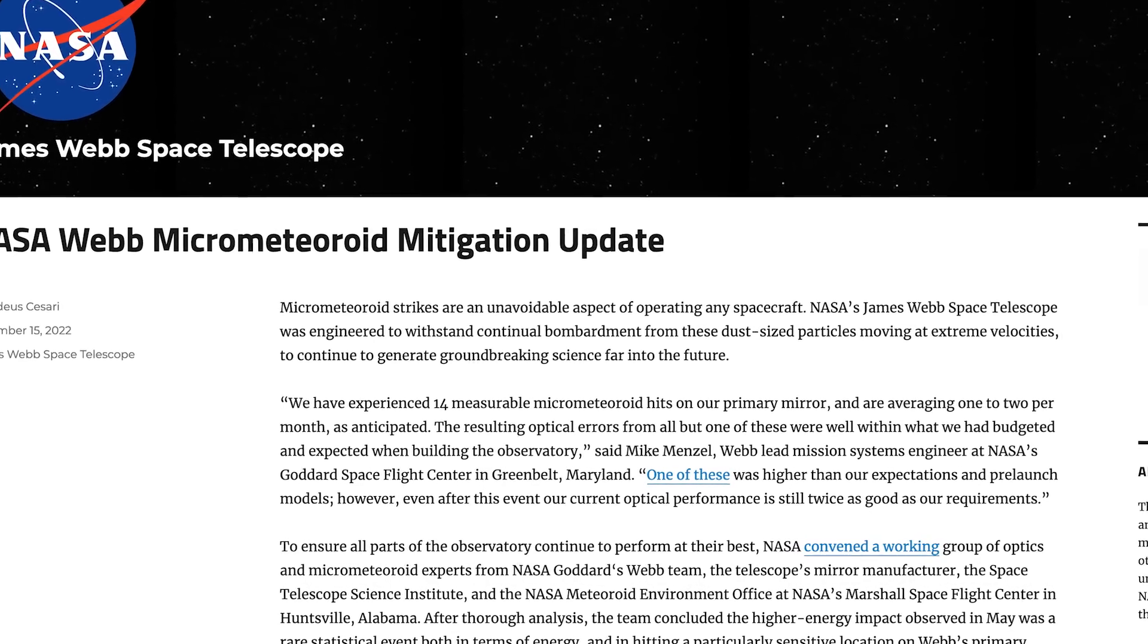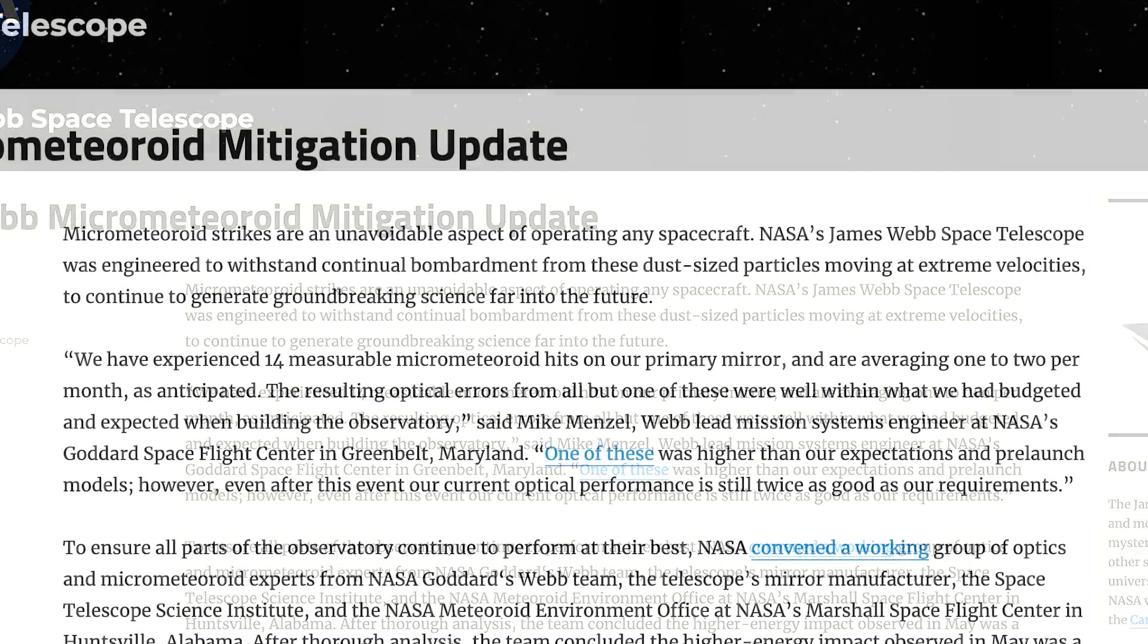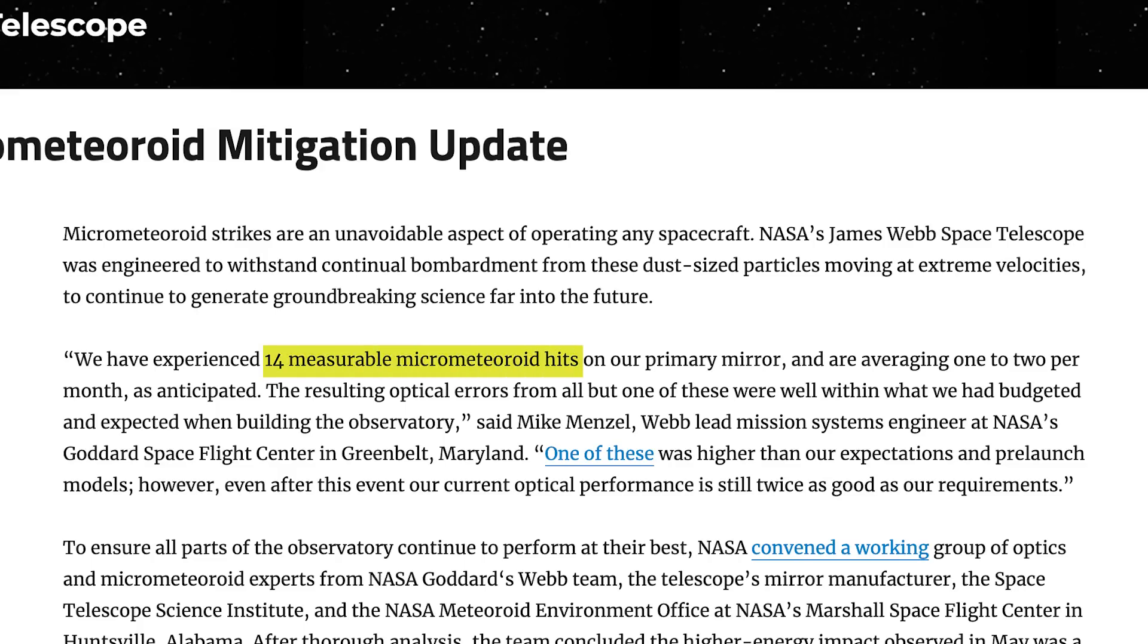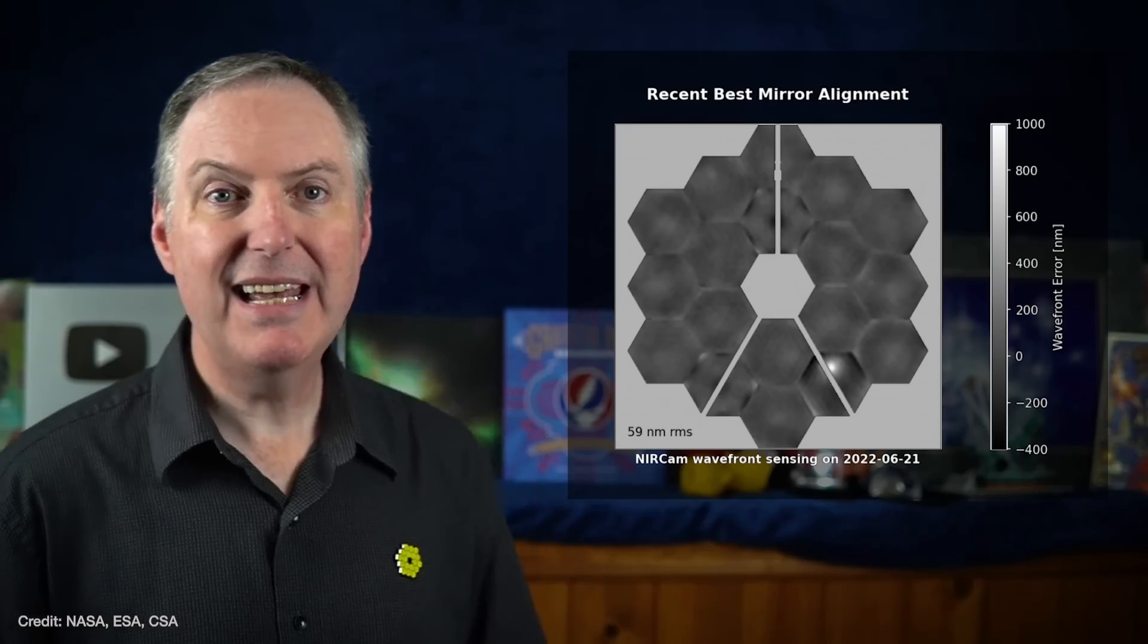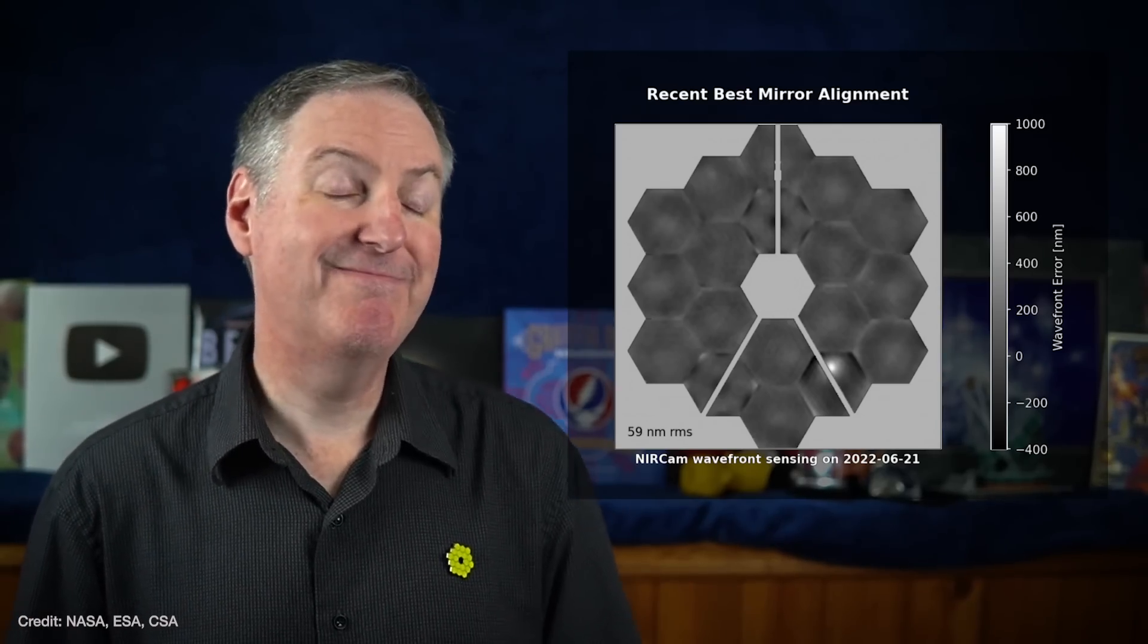However, there is another problem of sort in that Webb seems to have enough fuel on board to last for at least the next 20 years. And that's the official statement from NASA. Unofficially though, there's now some talk about 25 plus years of fuel remaining. So given that this impact happened earlier than expected, and given that Webb could be around for a lot longer than planned, NASA decided to convene a working group to think about the problem a little more. They announced their results on the November 15th entry on Webb's blog. As of publication, Webb had accumulated 14 impacts since launch. And that works out to about one to two impacts per month, which is exactly what the predictions were before launch.